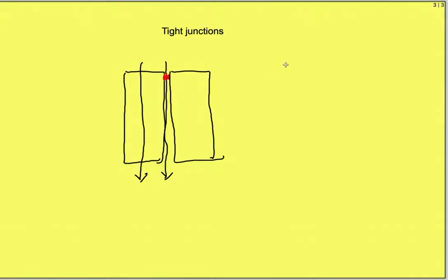These tight junctions are present in epithelial cells of intestine and nephron where absorption occurs through transcellular path. Otherwise anything and everything can enter via paracellular path.